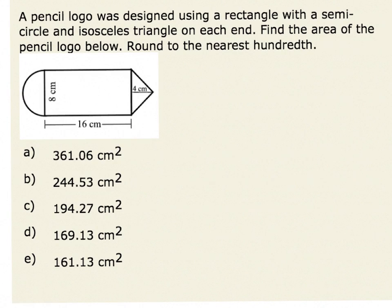A pencil logo is designed using a rectangle with a semicircle and isosceles triangle on each end. We want to find the area of the pencil logo below, and we're going to round to the nearest hundredths.